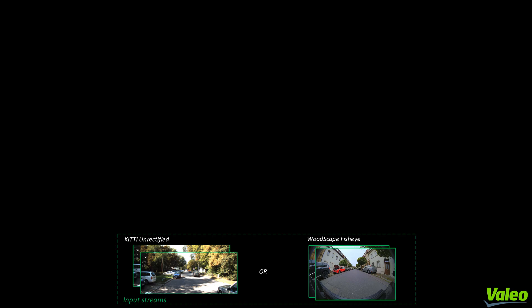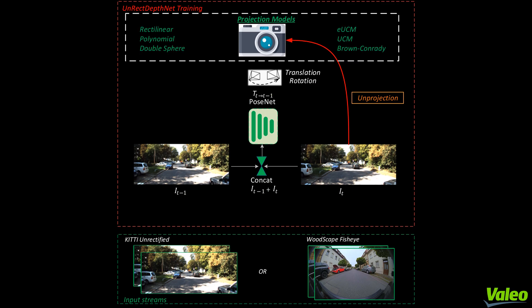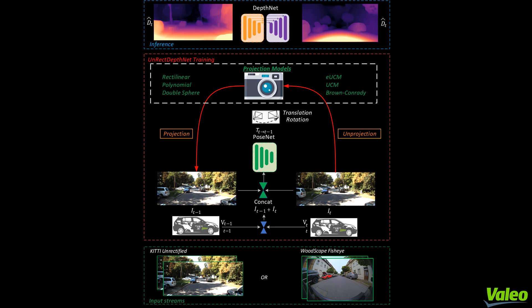We propose a generic training framework that can work with any camera model of choice. For example, the input to the network can be data from the KITTI unrectified or fisheye images from the WoodScape dataset. For the UnRectDepthNet training, we employ the self-supervised training regime explained earlier. We perform the unprojection from image to camera coordinates during the view synthesis operation to synthesize the target view. During this phase, the projection model required to perform the unprojection can be of any choice given a pre-calibrated setup. Any one of the listed standard models can be used in our generic training framework. Finally, we perform the projection from camera to image coordinates, and we also solve the scale ambiguity using the vehicle's odometry data. The figure shown here depicts an entire overview of our generic framework.